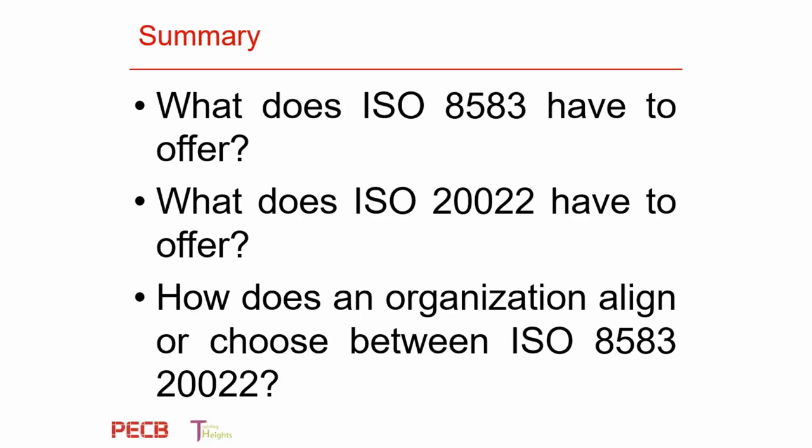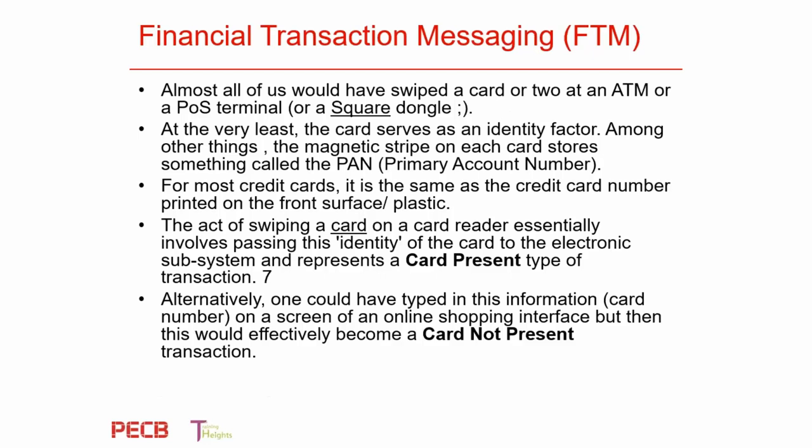Let us start by talking about financial transaction messaging, called FTM. These days you really cannot do any business, especially using a card, using an ATM, or using a point-of-sale system. On the card, you usually have something called the primary account number, which is validated across the network and is aligned to the credit card number. You have some transactions you can do using a card and some you cannot.